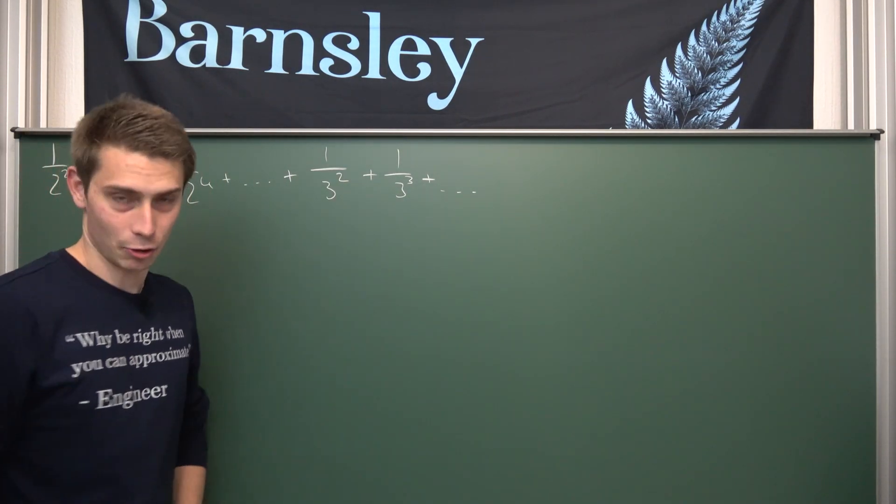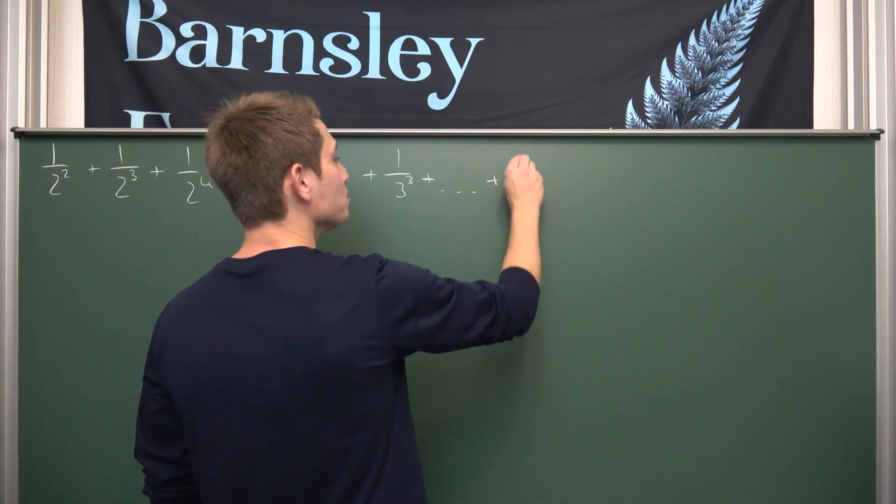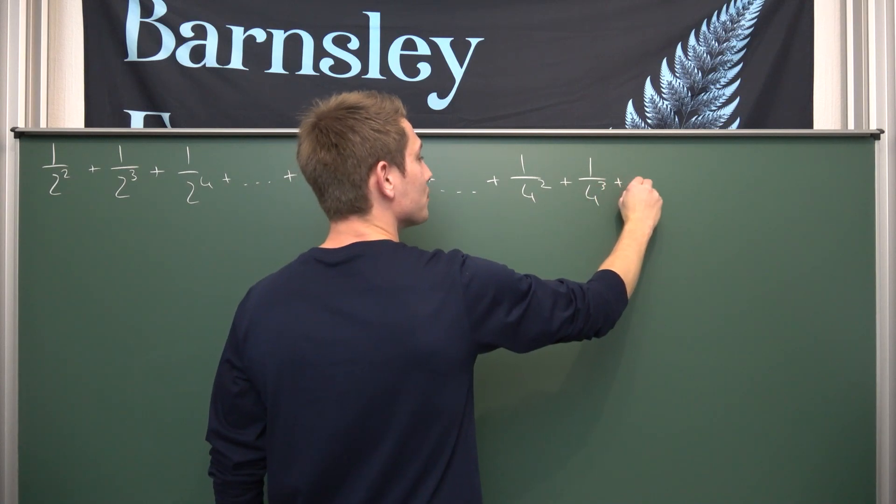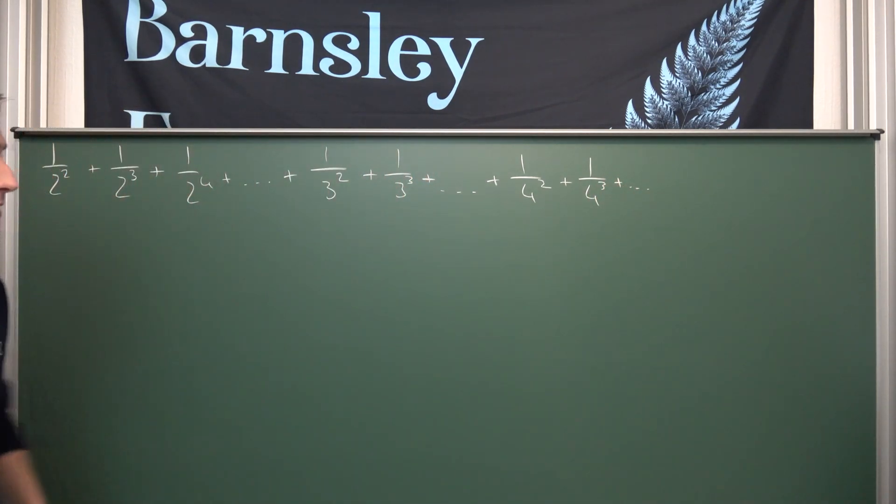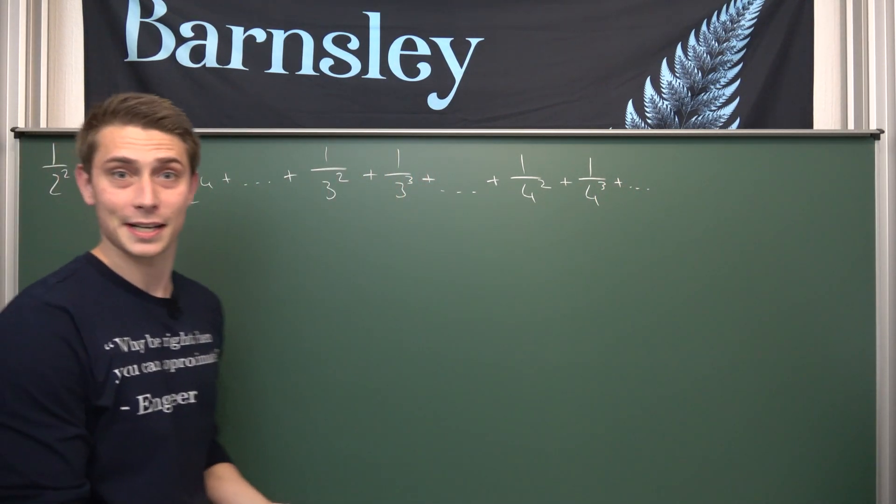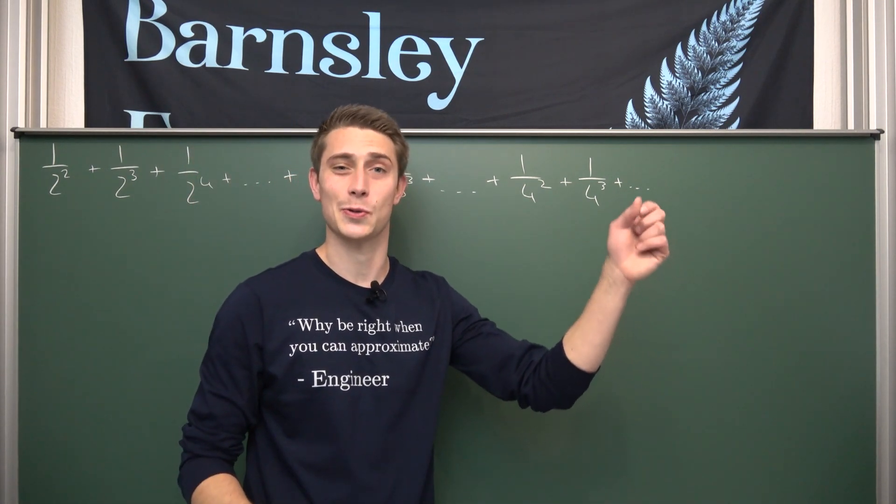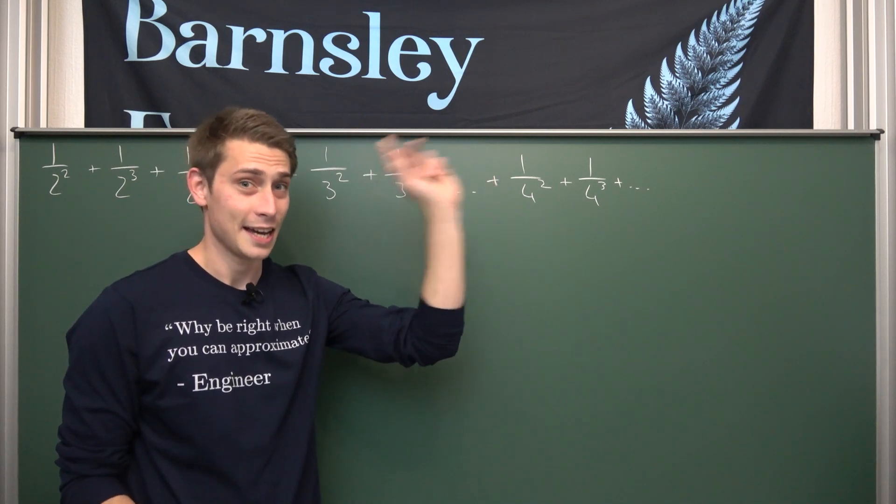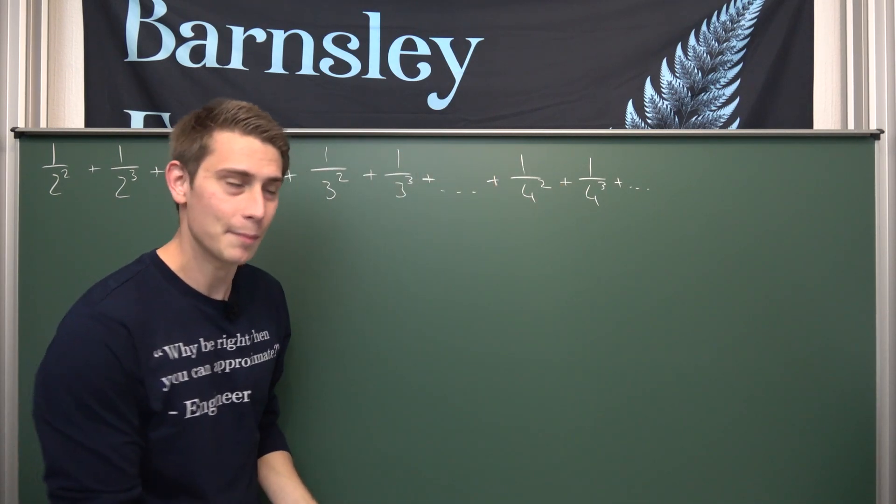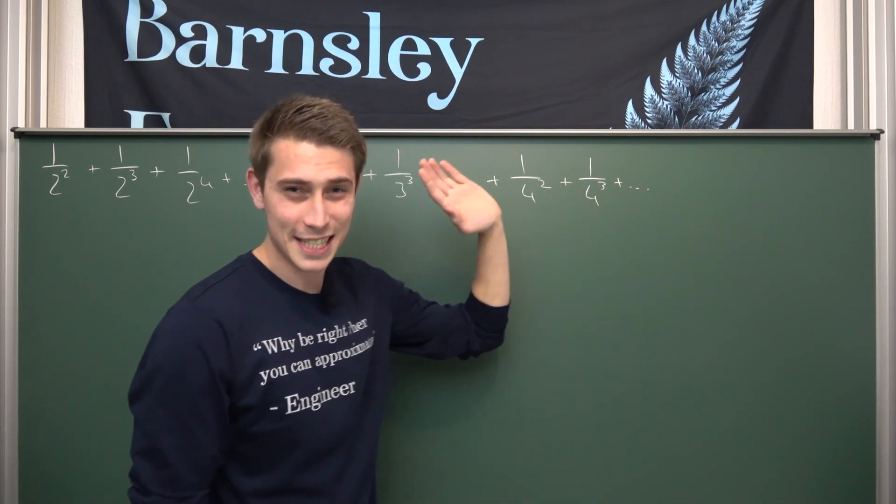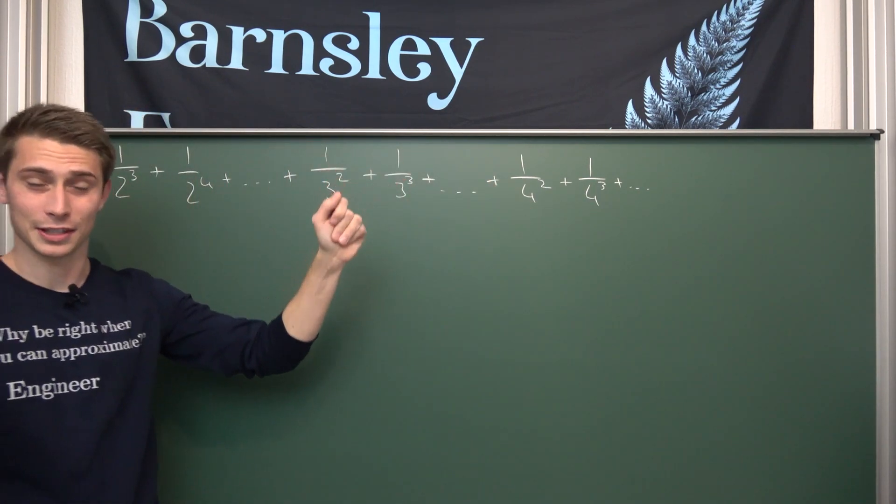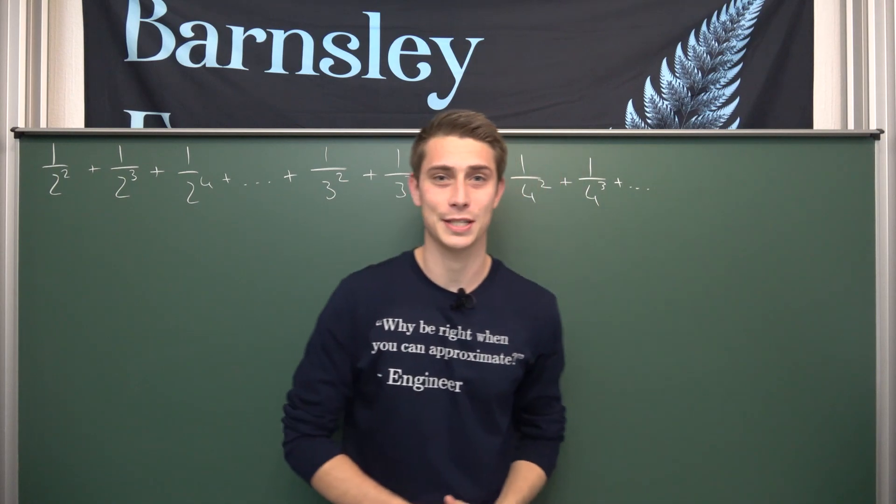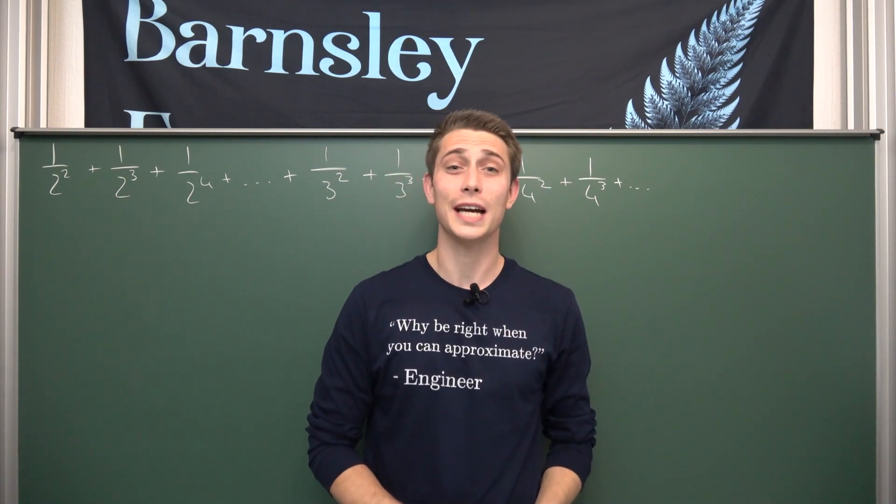Goes on up until infinity. But it doesn't end there, obviously. Now we are going to get 1 over 4 squared plus 1 over 4 cubed plus blah blah blah, up until infinity. What is going to come next? Well, obviously, 1 over 5 squared plus 1 over 5 cubed, blah blah blah, up until infinity. And this pattern will continue up until infinity. So we can extend our dot dot dot infinitely many times. And we are going to get an infinite series out. And this is what we are going to calculate today.